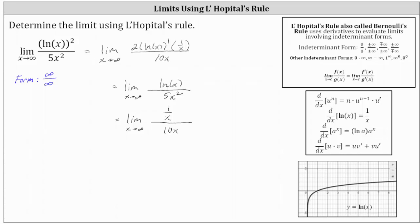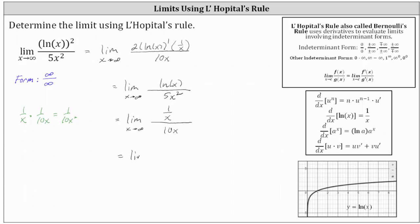Let's show the simplifying. We have 1 divided by x, and then dividing by 10x is equivalent to multiplying by 1 over 10x, which gives us 1 divided by 10x squared. So now we have the limit as x approaches infinity of 1 divided by 10x squared.